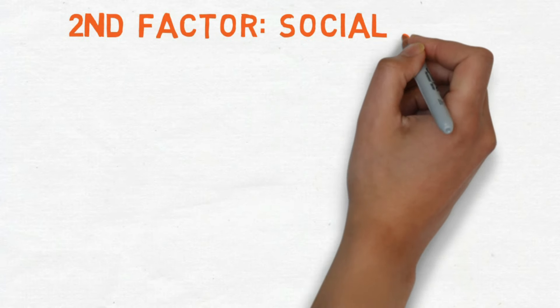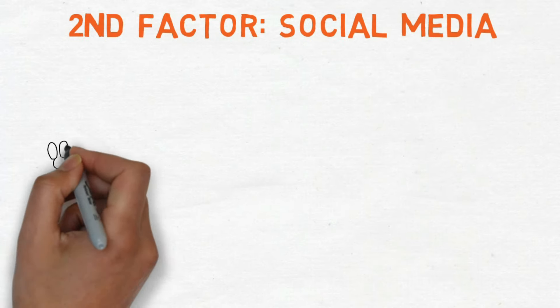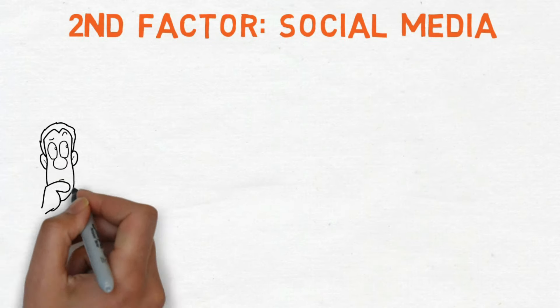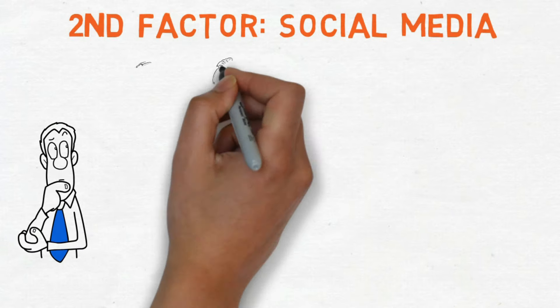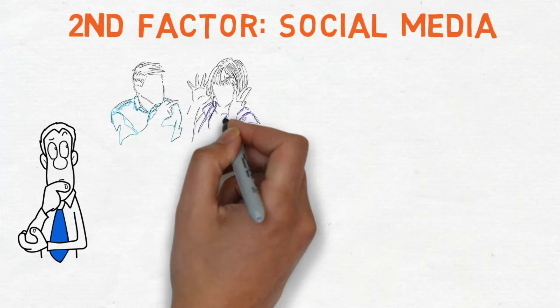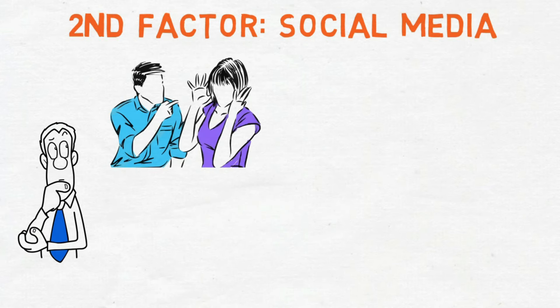The second factor is social media. If you often think other people are richer than you, social media might be making you see things that way. Think about it. How often do you see someone talking online about their marriage problems caused by having too much debt? Rarely, if ever.